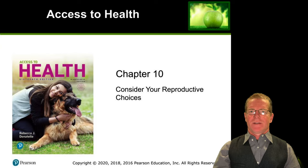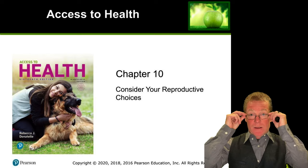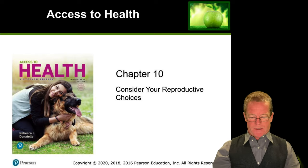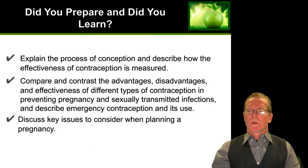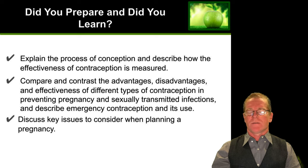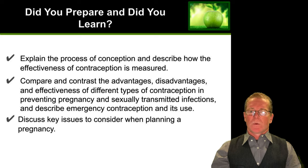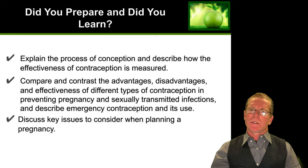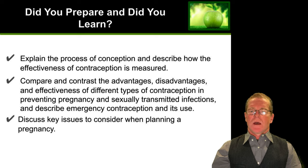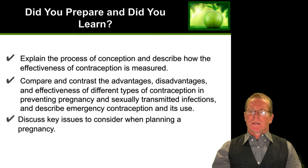Hello and welcome back. Today I'm going to talk to you about chapter 10, considering your reproductive choices. In this chapter we're going to explain the process of conception, describe the effectiveness of various contraceptive methods, talk about the advantages and disadvantages of different types of contraception with respect to the prevention of sexually transmitted infections, describe emergency contraception use, and discuss key issues regarding planning for pregnancy.